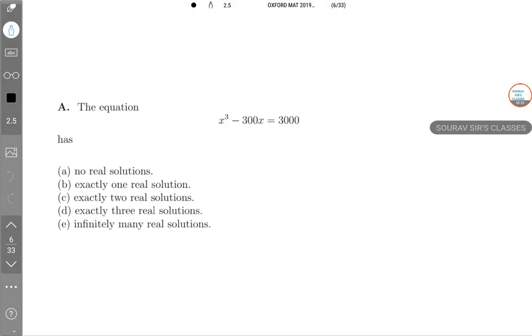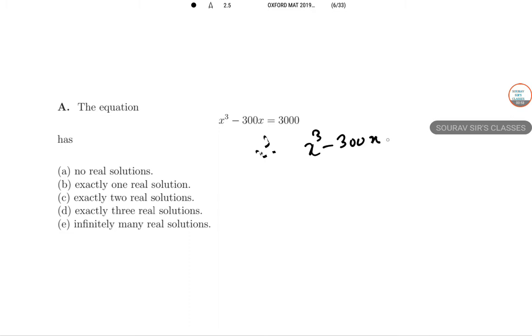They have given a cubic equation and ask how many solutions it has. Looking at it, x³ - 300x - 3000 = 0. This function has some turning points. Remember that if the power is 3, then the turning points will be happening at 2 locations. The LHS x³ - 300x has turning points at two cases: x = +10 and x = -10.